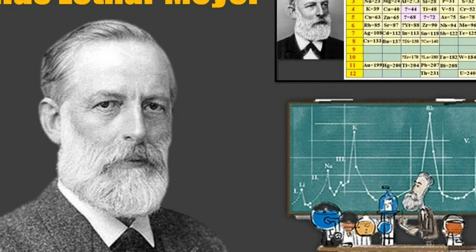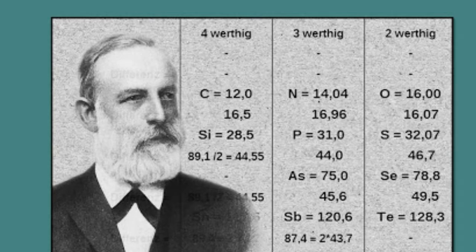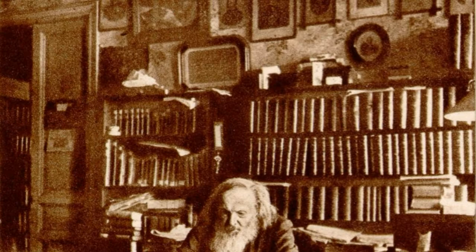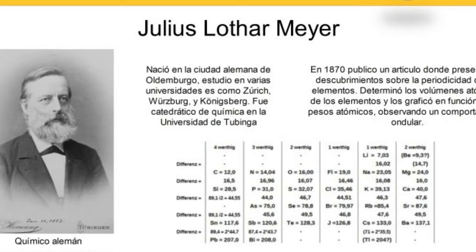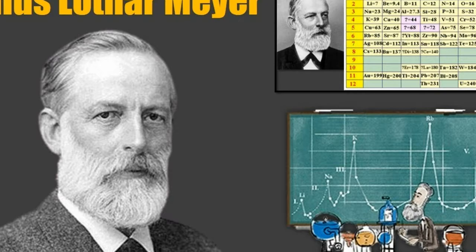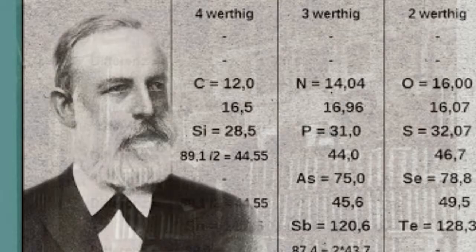After taking his M.D. degree from Würzburg in 1854, he went to Heidelberg, where Robert Bunsen held the chair of chemistry. In 1858, he graduated with a Ph.D. with a thesis on the action of carbon monoxide on the blood. With this interest in the physiology of respiration, he had recognized that oxygen combines with the hemoglobin in blood. Influenced by the mathematical teaching of Gustav Kirchhoff, he took up the study of mathematical physics at Königsberg under Franz Ernst Neumann, and in 1859 he became privatdozent in physics and chemistry at the University of Breslau.